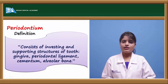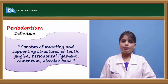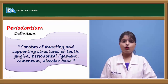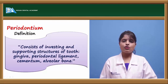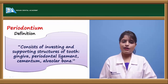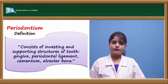The periodontium comprises the supporting structures of the teeth. It mainly consists of the gingiva, the periodontal ligament, the cementum, and the alveolar bone.